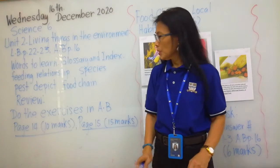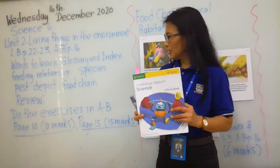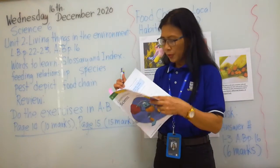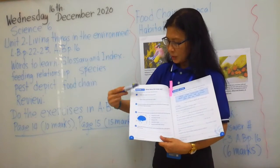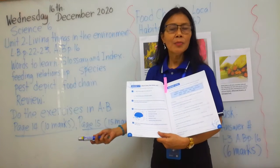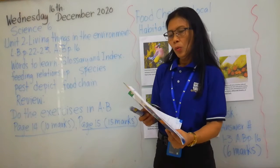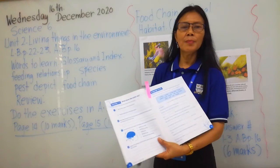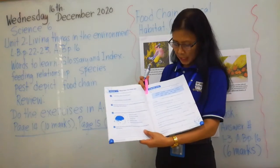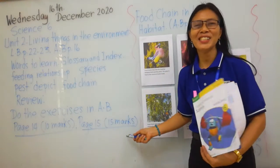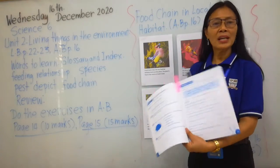For review, you are going to do the exercises in activity book page 14. I am going to give you 10 marks for this, and it's about what does the brain do. And for page 15, I am going to give you 15 marks for that. It's about the language review.